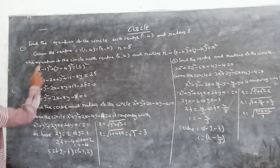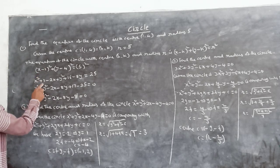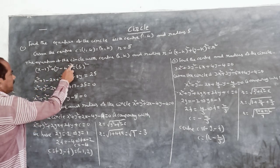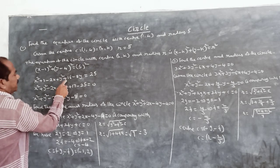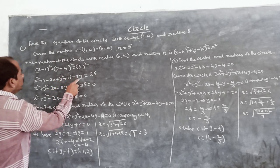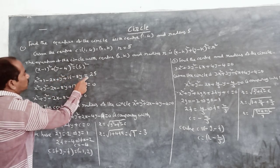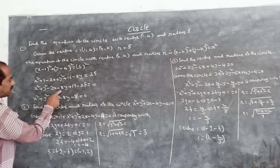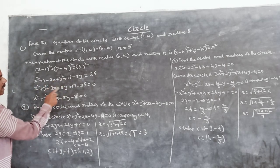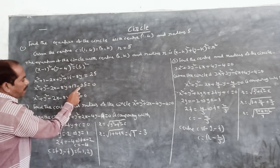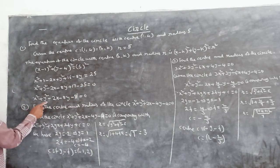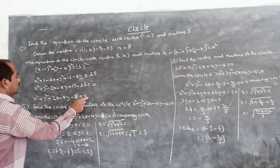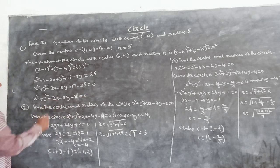Expanding: x minus 1 whole square equals x square plus 1 minus 2x. And y minus 4 whole square equals y square plus 16 minus 8y. Combining: x square plus y square minus 2x minus 8y plus 1 plus 16 minus 25 is equal to 0, giving x square plus y square minus 2x minus 8y minus 8 is equal to 0. This is the equation of the circle.